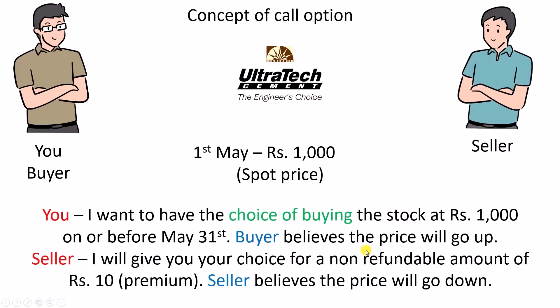In the previous video, I used this to explain the concept of call option and put option. Recalling this: the date is May 1st and the price at which the stock of Ultratech Cement is trading is ₹1000. The current market price at any time is called the spot price. There is a buyer and there is a seller. The buyer says, I want to have the choice of buying the stock at ₹1000 on or before May 31st. May 31st is the expiry of the option. He does this because he believes the price will go up.